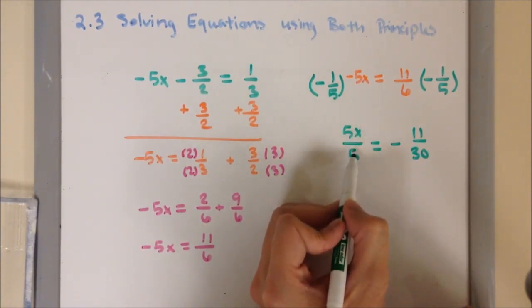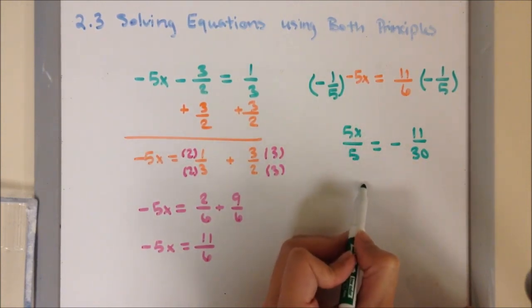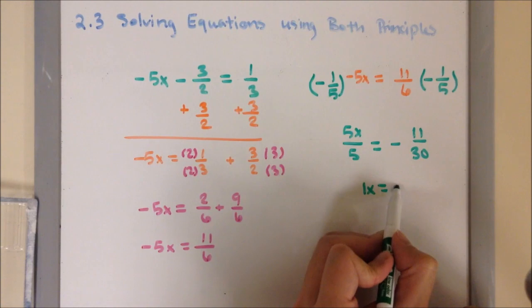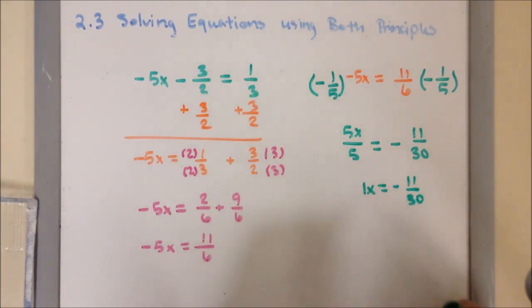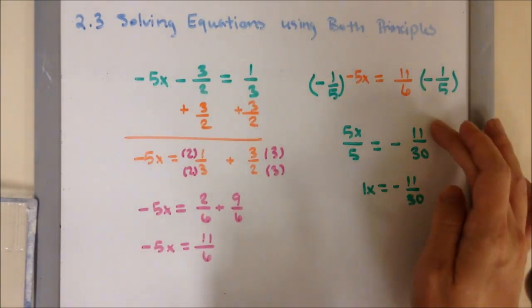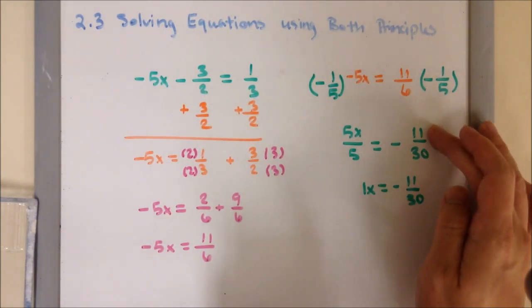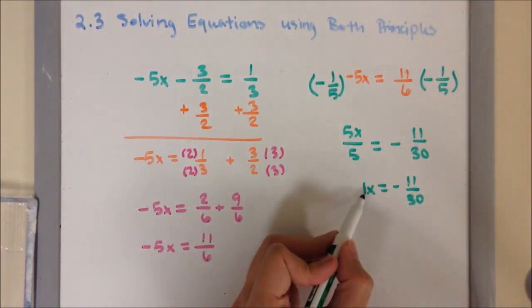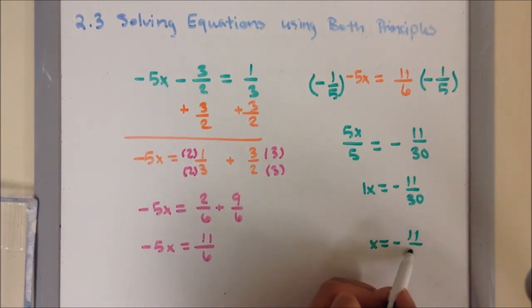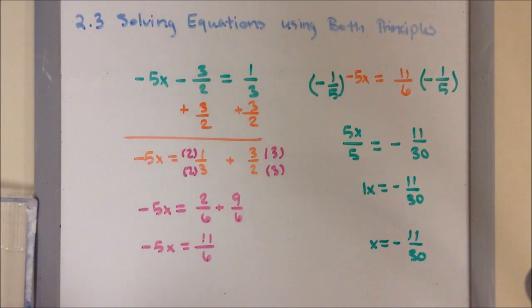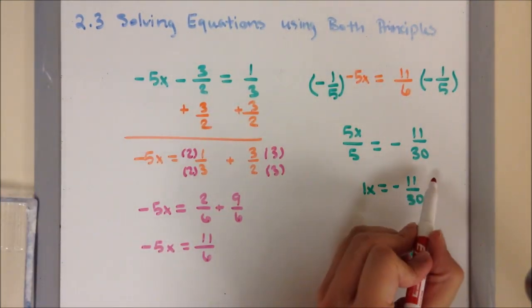Simplifying, 5x over 5 becomes 1x equals negative 11 over 30. I can't simplify because there is nothing in common between 11 and 30. So, 1x equals negative 11/30, or x equals negative 11/30. Those are the two forms of our final answer.